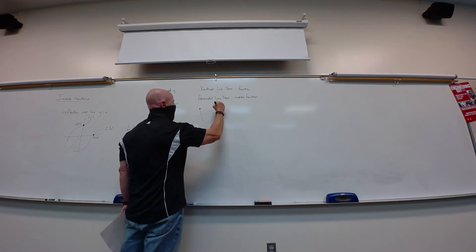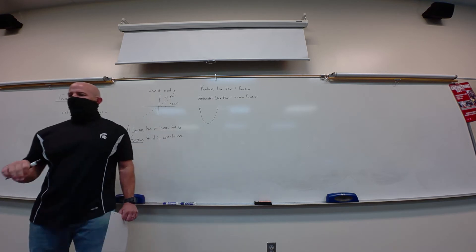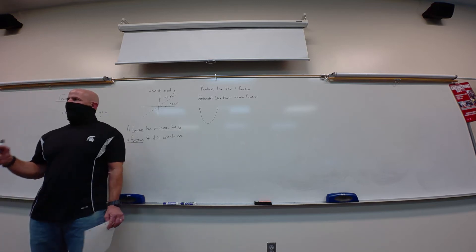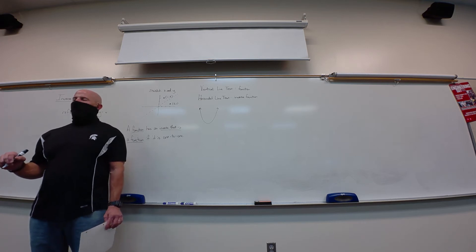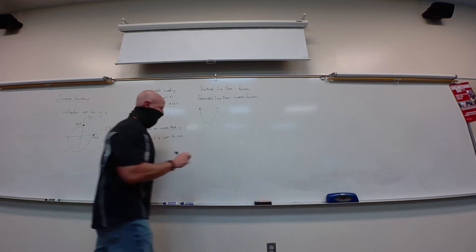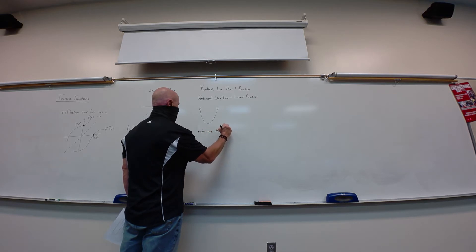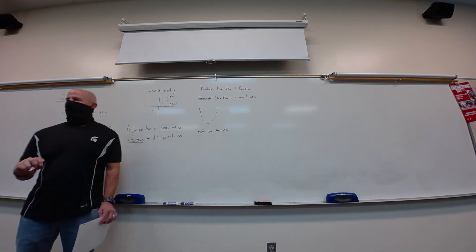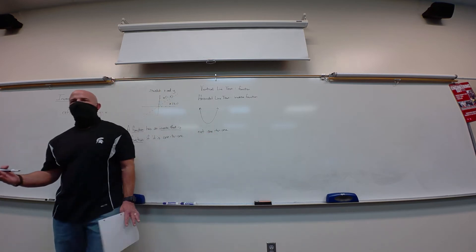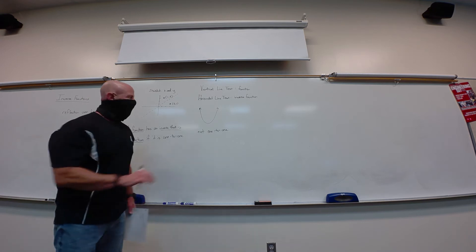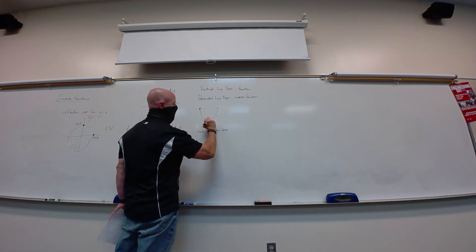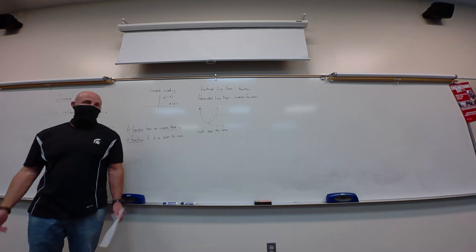Take our basic parabola — that's a function, every x corresponds to exactly one y. However, it does not pass the horizontal line test. We would say this is not one-to-one. It doesn't mean you can't graph the inverse; we're just saying that inverse sketch would not be a function. If you reflect a parabola over y equals x, it would look like a parabola opening to the side, which is not a function.